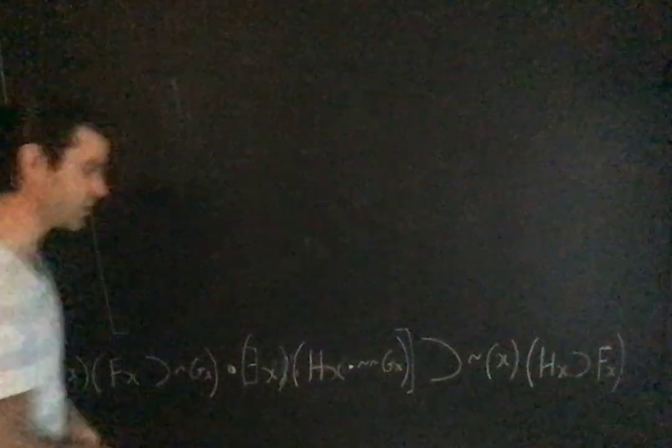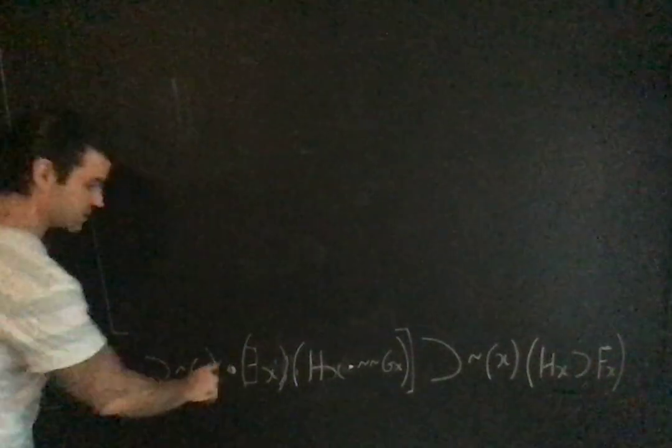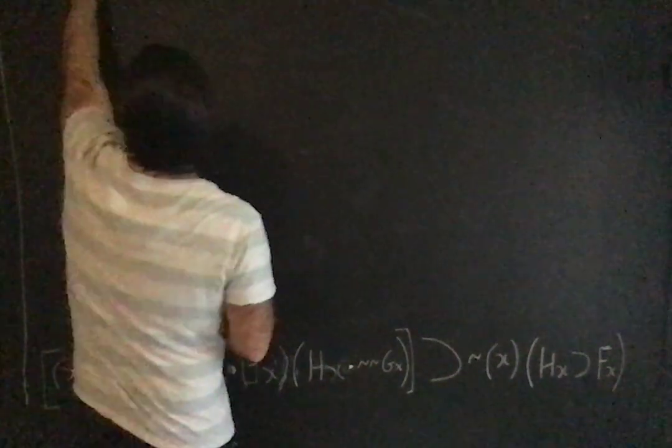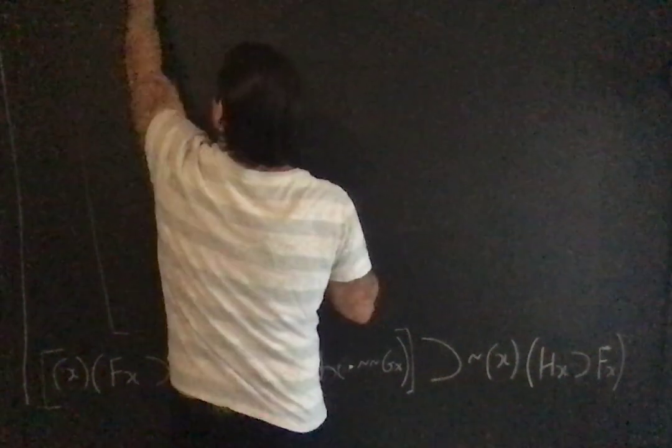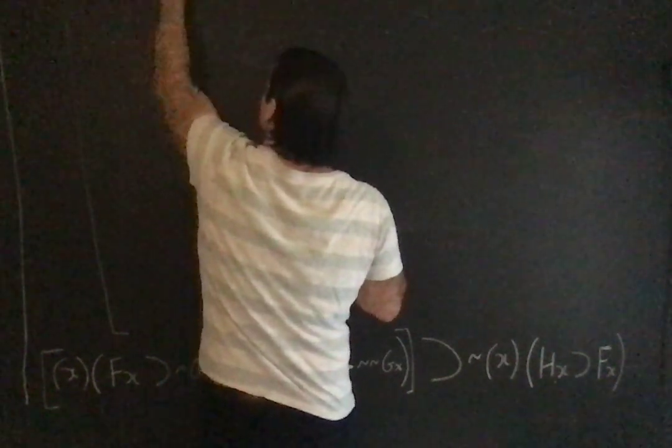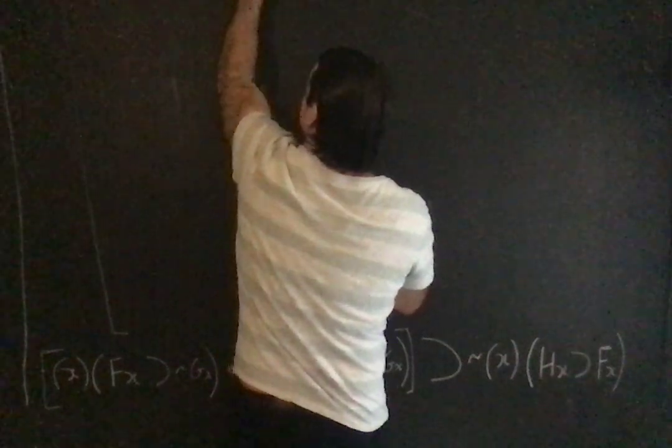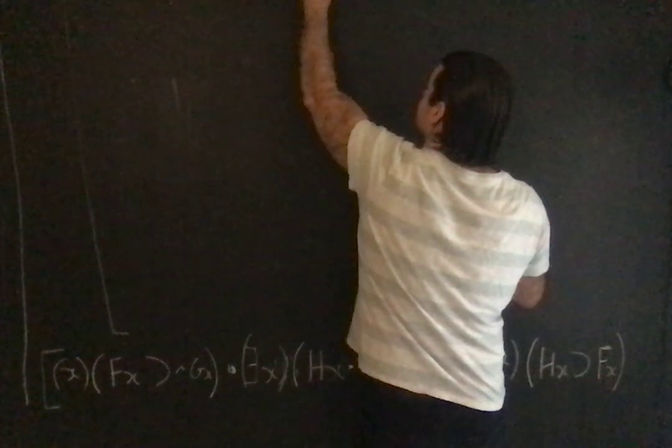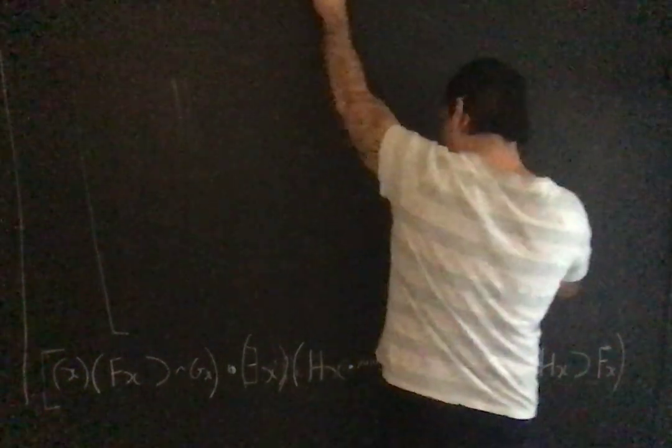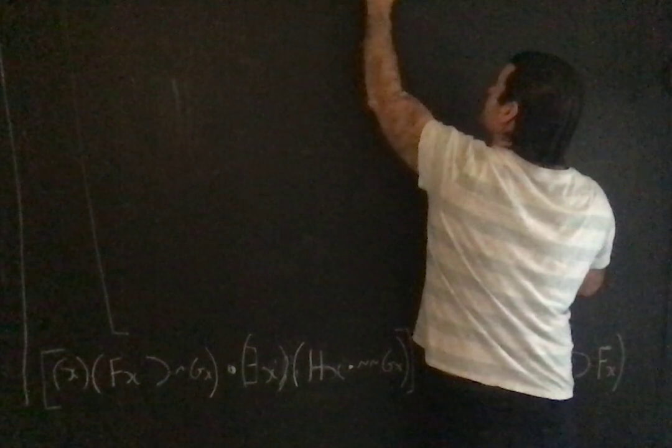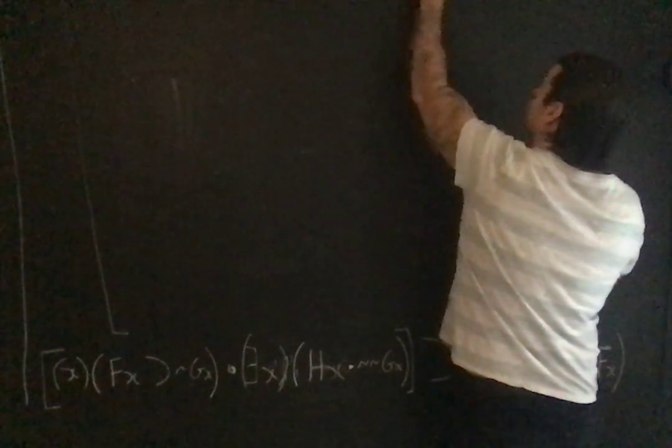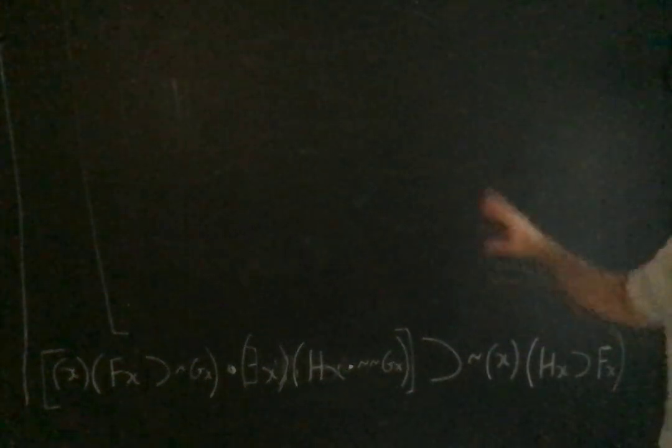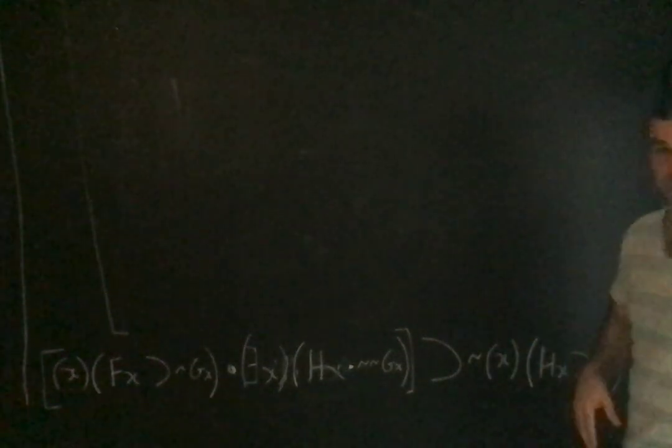I'm going to put my, so the antecedent is what? The form of the antecedent, you'll notice, is a conjunction. This whole thing here is the antecedent. It's for all x, fx hook not gx, and there exists an x, which is hx and not gx. So that's my antecedent. That's the antecedent of this conditional. I'll notice it's a conjunction.